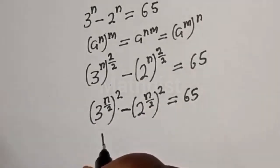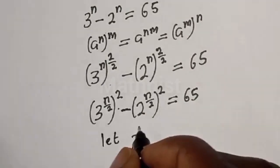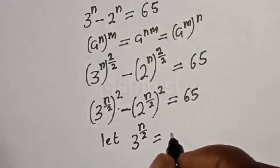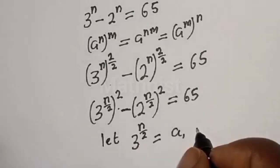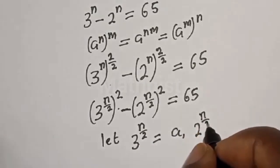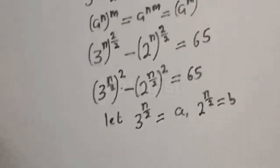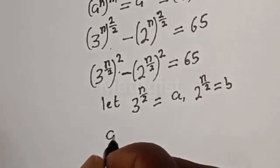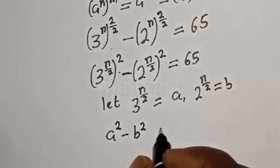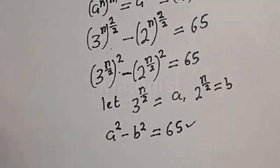Let 3 raised to power n/2 equal a, and 2 raised to power n/2 equal b. Then the equation becomes a squared minus b squared is equal to 65. This is a difference of two squares.